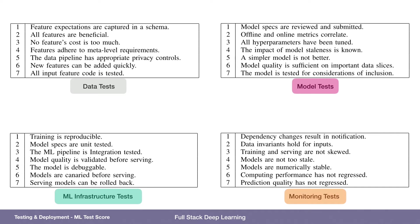For monitoring: dependency changes result in notification, data invariants hold for inputs, training and serving are not skewed (that refers to the data distribution), models are not too stale, models are numerically stable, computing performance has not regressed (that refers to how fast it takes to run the model), and prediction quality has not regressed.